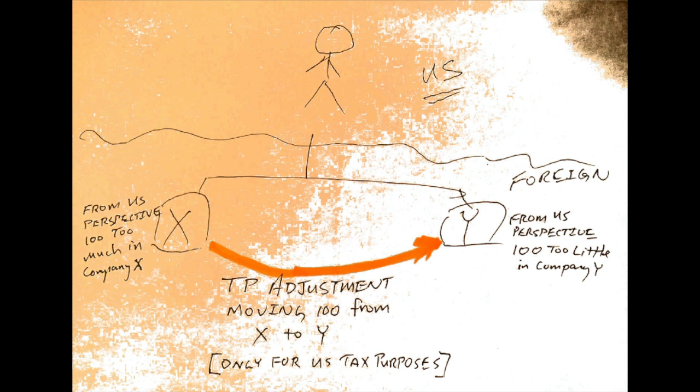It will, of course, affect the earnings and profits within X and Y, and that can affect the character of distributions to the individual that X and Y make — either actual distributions or, as we'll cover in a moment, possible deemed distributions.